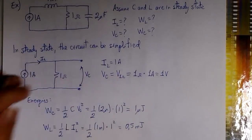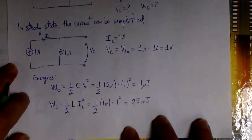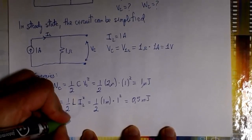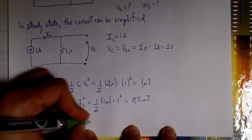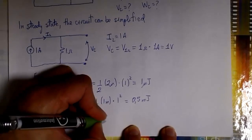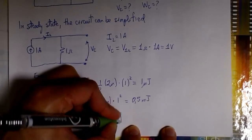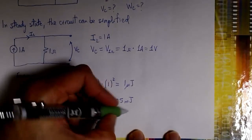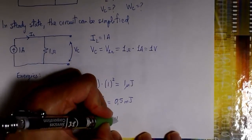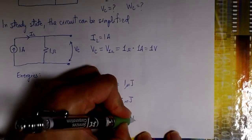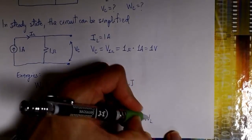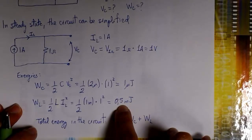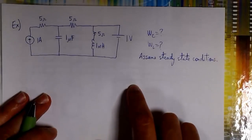We can also find the total energy stored in the circuit in a steady state. Let's call it WT. That is just a summation of WC plus WL: 1 microjoule plus 0.5 millijoules. Now let's see another example that is a little bit more complex — we have two sources and more resistors.